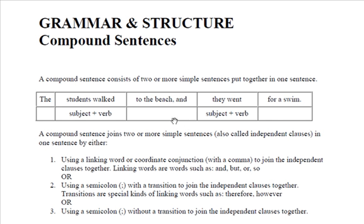So to make things a little bit smoother, we add a comma instead of a period, which is a short pause in the sentence. In other words, if we just use commas, the students walked to the beach, they went for a swim. But in this case, we use a coordinate conjunction.